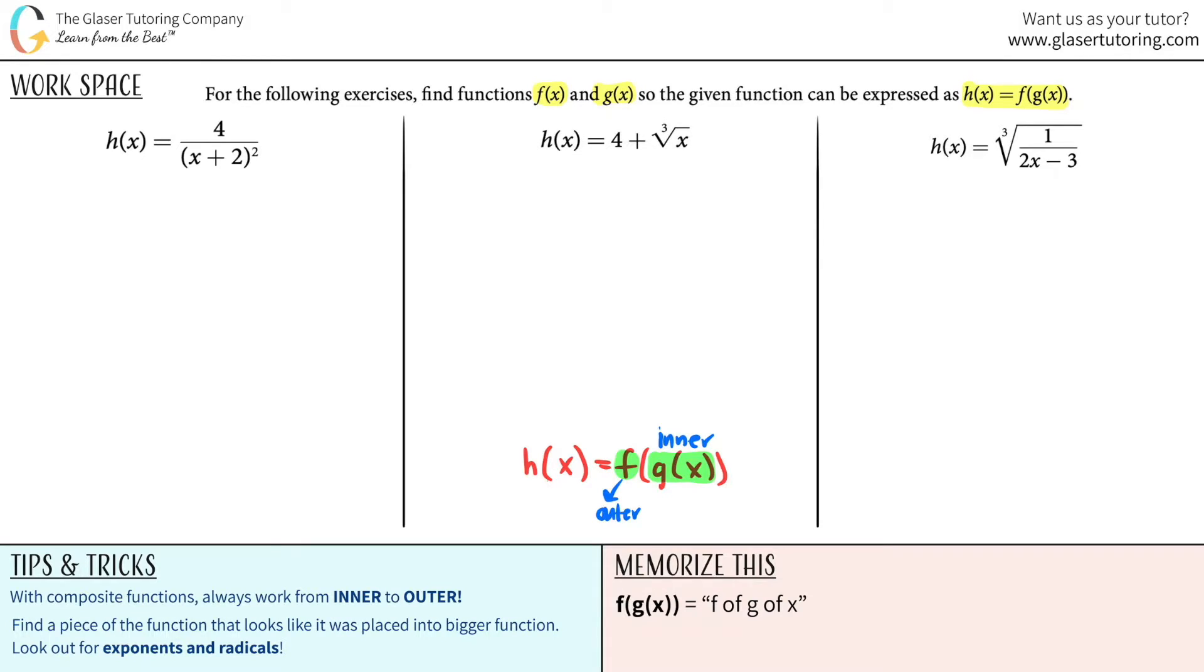When you're trying to make your function so that you get your composite functions, it's always easiest to work from inner to outer. Okay, now since we have to get the pieces of the puzzle, here is a quick tip. You're going to find the piece of the function that looks like it was placed into a bigger function. You're going to look out for exponents and radicals.